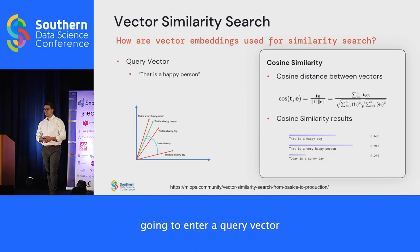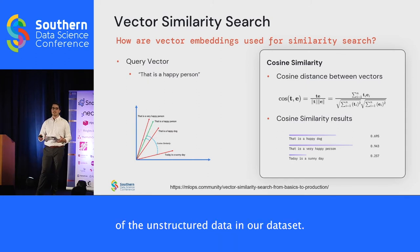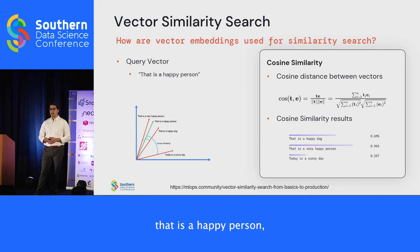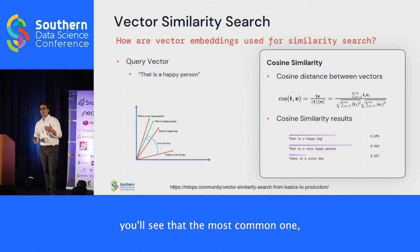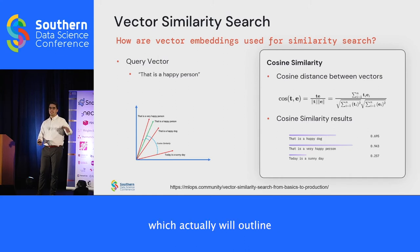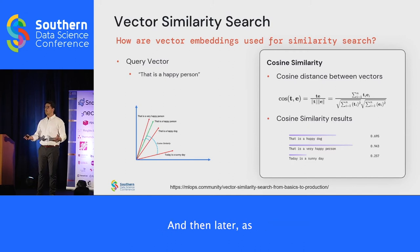We enter a query vector: 'That is a happy person.' Our goal is to calculate how similar that piece of unstructured data is to the rest of our dataset. You'll see that the most similar result — unsurprisingly — is 'That is a very happy person.' The results shown are directly from the Hugging Face API. You can reproduce all of this by going to the blog, which outlines a lot more of this talk, showing how to do this in pure Python, the Hugging Face API, and later in Redis.